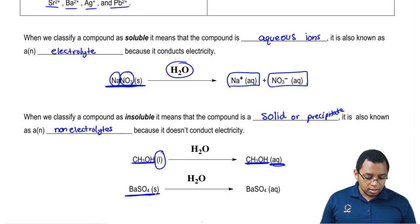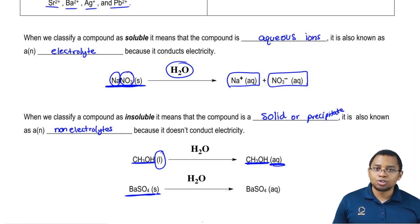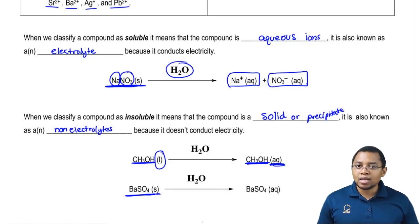Barium sulfate is a solid. Remember, sulfates are soluble unless they're connected to certain ions. One of those ions is barium. That means that this compound would be insoluble following our solubility rules.